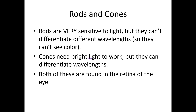To reiterate: rods and cones are your photoreceptors — they actually detect wavelengths of light. Rods are spread over the entire retina and provide blurry but functional vision even in dim light. Cones, on the other hand, give you very crisp, clear vision and can detect different wavelengths so you can see different colors, but they require bright light to work.